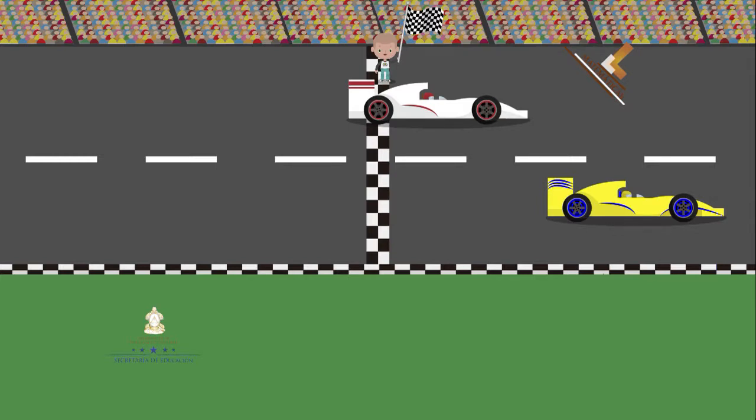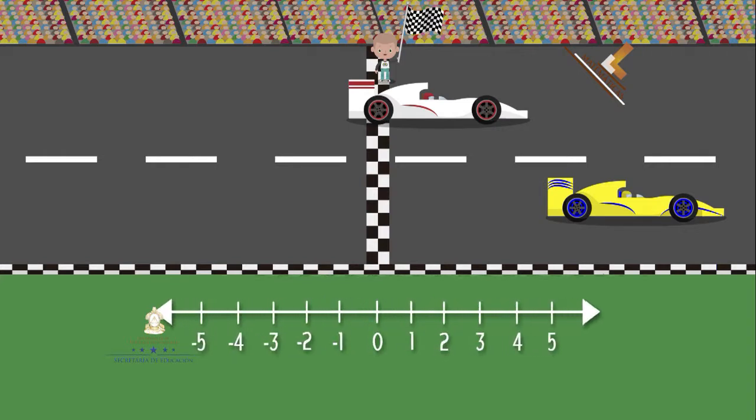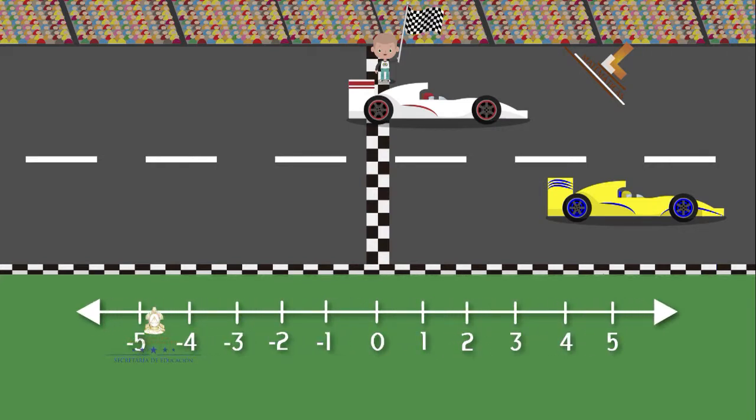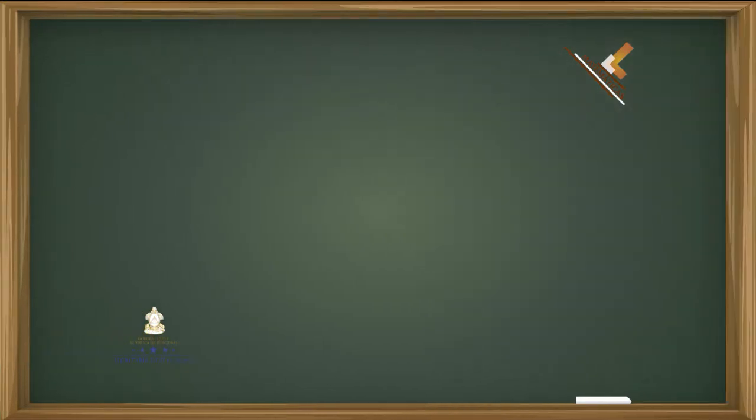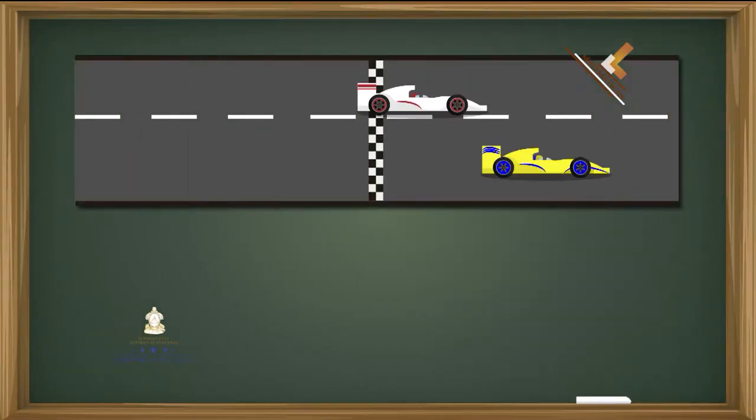Para descubrir la diferencia entre ambos autos, utilizaremos la recta numérica para observar la posición final de cada auto. Luego vamos a realizar la diferencia entre la posición final del auto amarillo y la posición final del auto blanco.